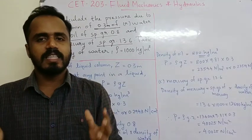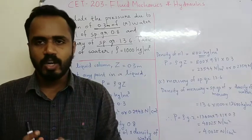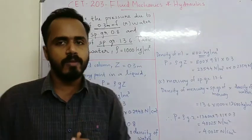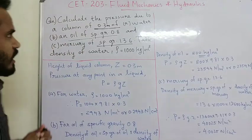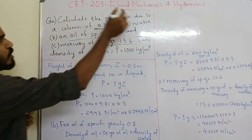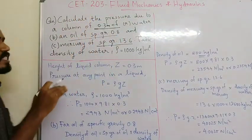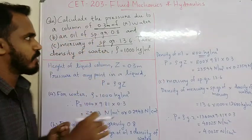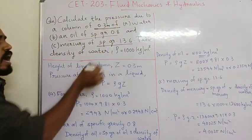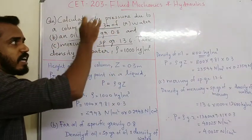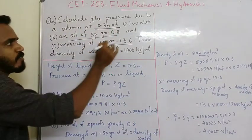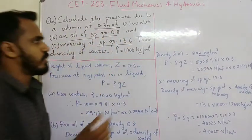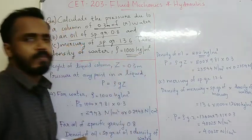Hi students, we are going to discuss the hydrostatic law and solve problems with it. First, calculate the pressure due to a column of 0.3m of water, oil of specific gravity 0.8, and mercury of specific gravity 13.6. Take the density of water, rho, equal to 1000 kg/m³.